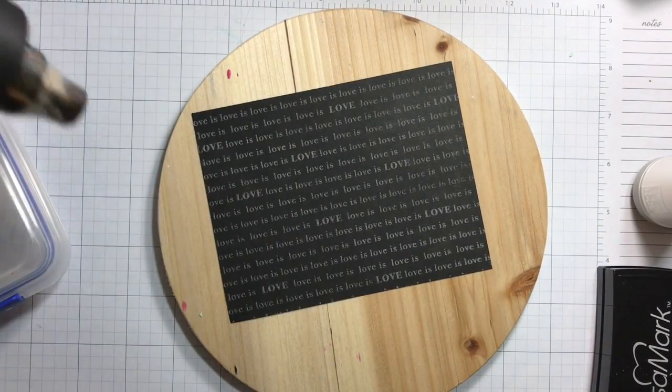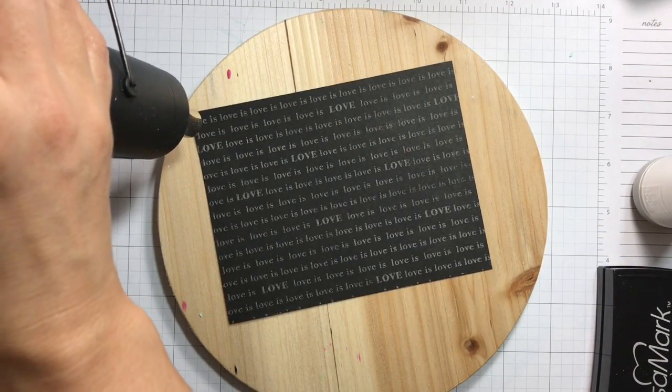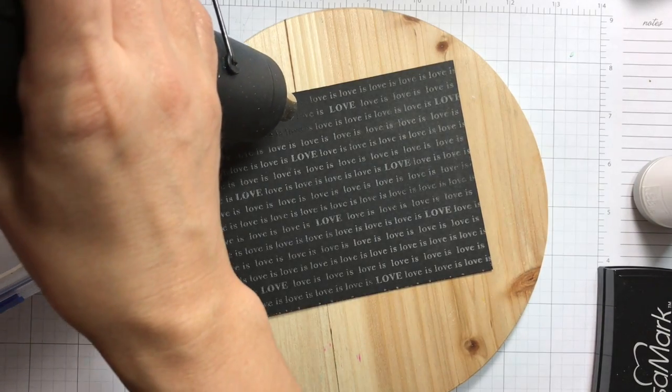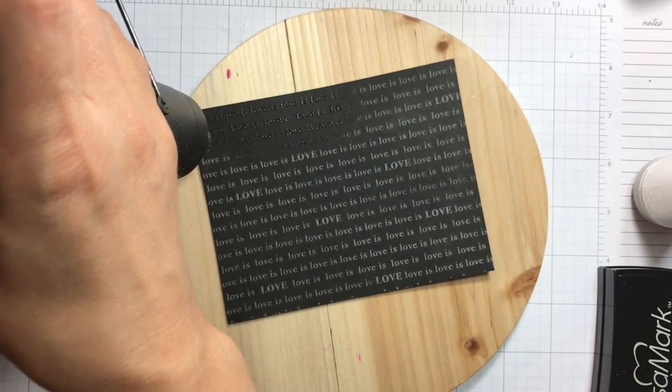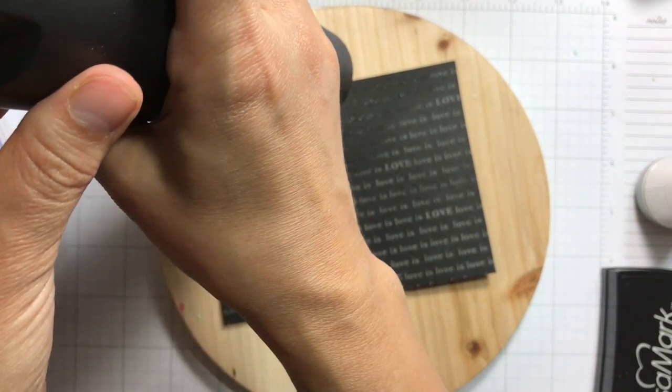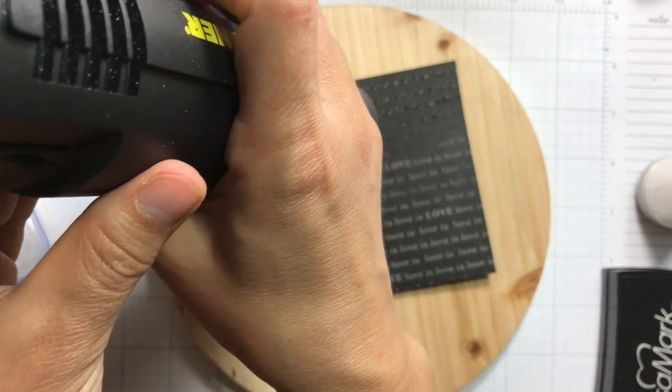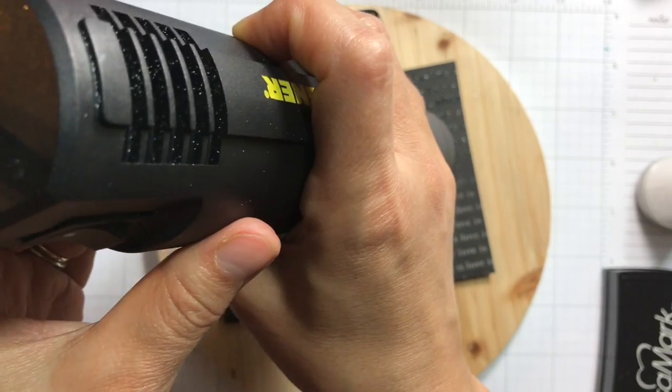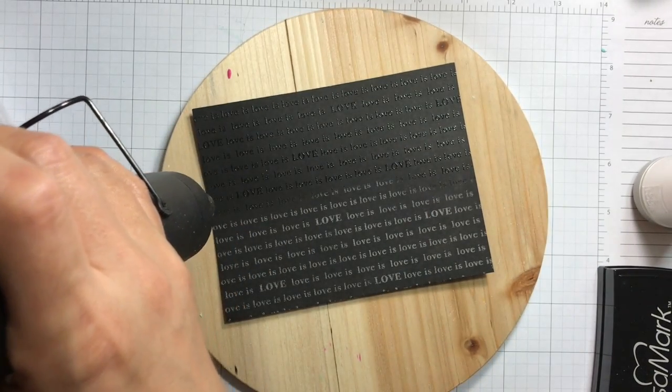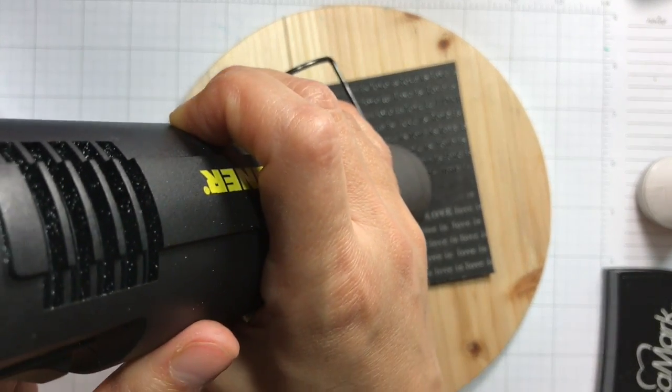Next I'll use my heat tool to heat set the embossing powder. You can see here how it's melting. The white-looking powder disappears and we have this nice textured, shiny, clear background.